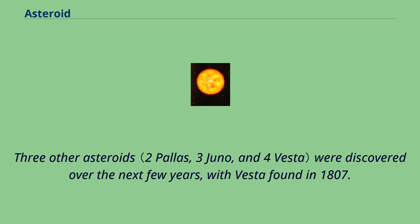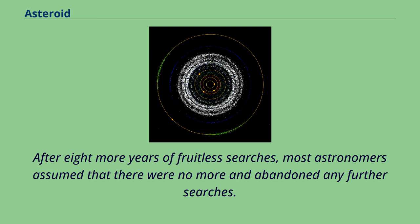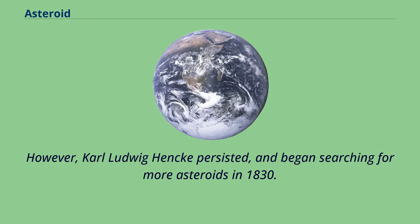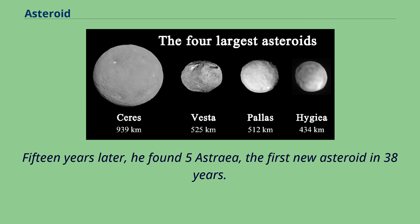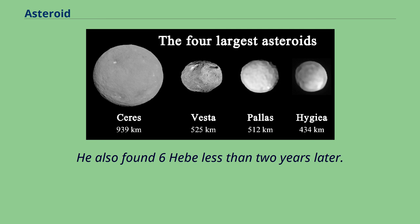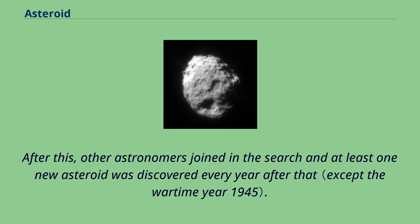Three other asteroids were discovered over the next few years, with Vesta found in 1807. After eight more years of fruitless searches, most astronomers assumed there were no more and abandoned further searches. However, Carl Ludwig Henke persisted and began searching for more asteroids in 1830. Fifteen years later he found 5 Astraea, the first new asteroid in 38 years, and also found 6 Hebe less than two years later. After this, other astronomers joined in the search and at least one new asteroid was discovered every year after that.